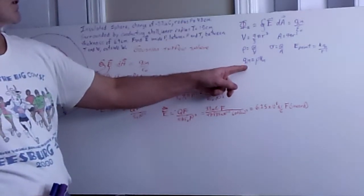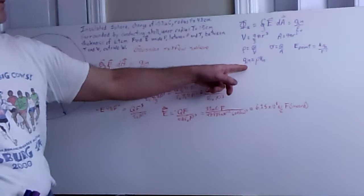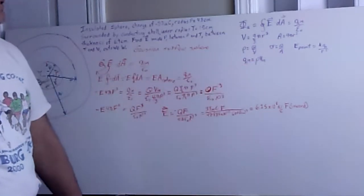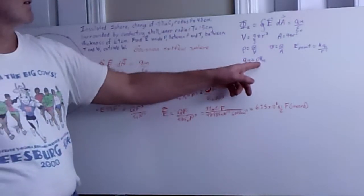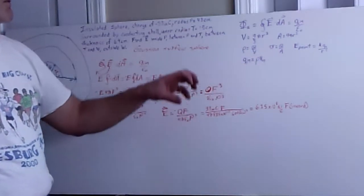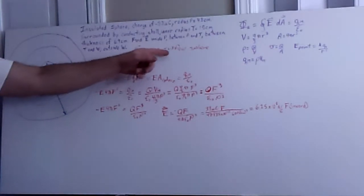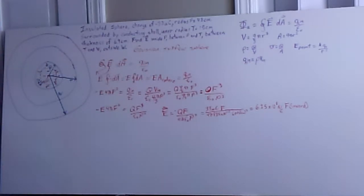And then finally the charge inside, Q in, is going to be dependent upon our Gaussian sphere that we choose. And so we take a charge density, volume charge density, multiplied by the volume of that Gaussian surface that we're going to be using. So our Gaussian surface ends up being a sphere because we have a spherical distribution. A cube or a cylinder wouldn't do us any good.